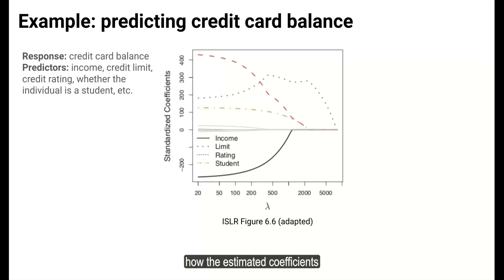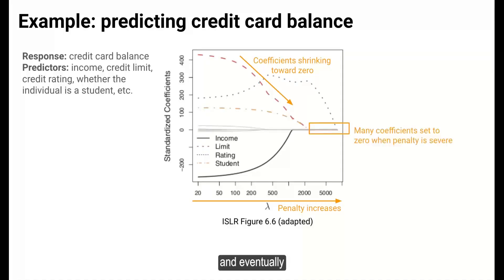The plot here shows how the estimated coefficients, plotted on the y-axis, change as the penalty lambda, shown on the x-axis, changes. As the penalty severity increases, the estimated coefficients move more and more towards zero, and eventually most of the coefficients are set to zero with a severe enough lambda penalty.